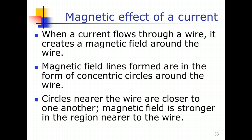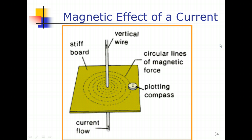Magnetic effect of a current — when there's an electrical current, there's a magnetic field generated around it. But how does this magnetic field look like? Before we discuss this further, I'd like you to recall what we have learned in the earlier chapter on magnetism, especially the part about how we determine the pattern of the magnetic fields around a permanent magnet.